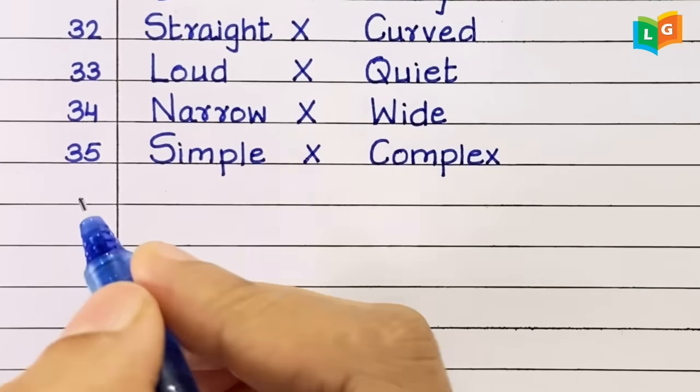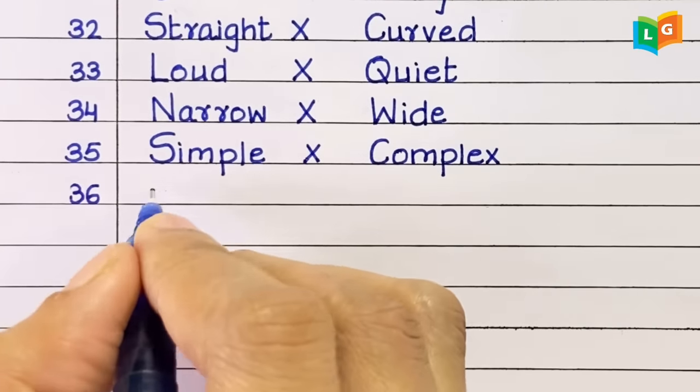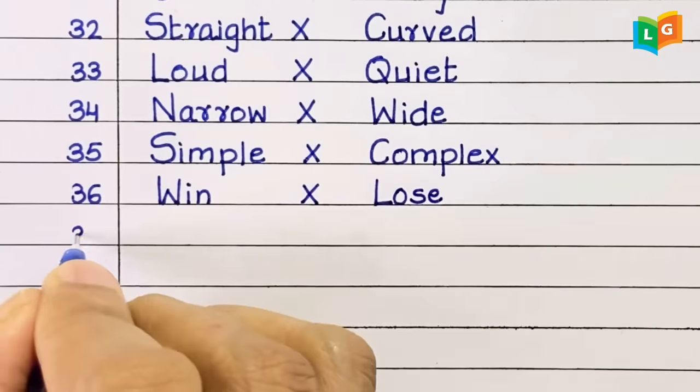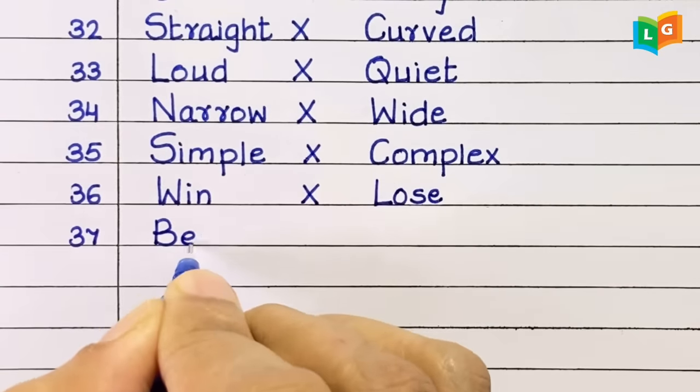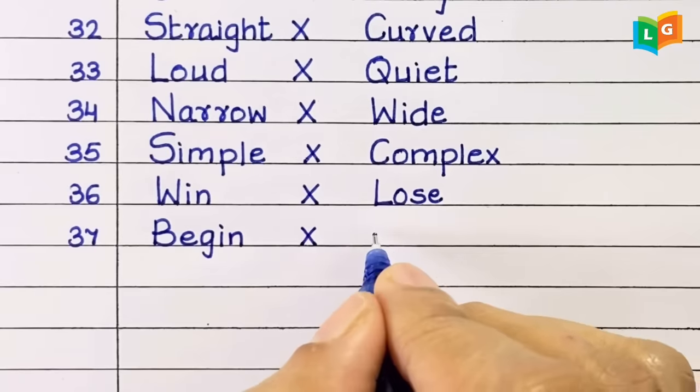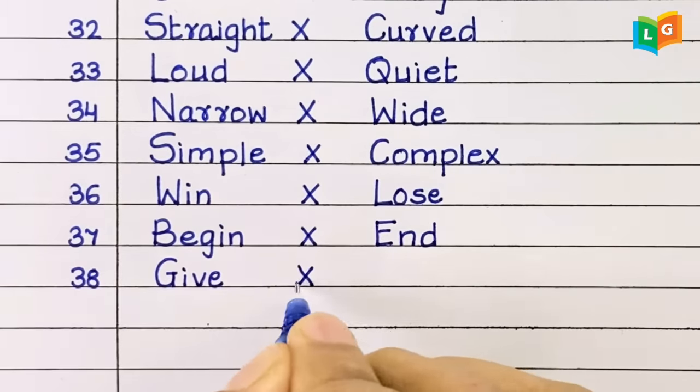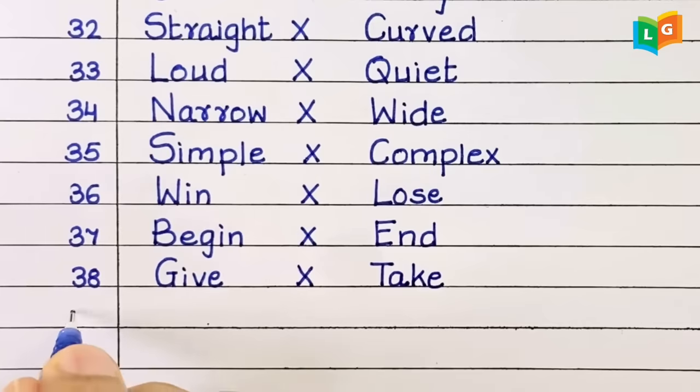Thirty-six, win, lose. Thirty-seven, begin, end. Thirty-eight, give, take.